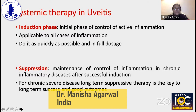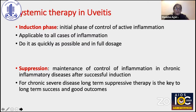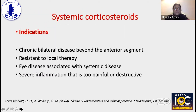For systemic therapy with corticosteroids in uveitis, we have an induction phase and a suppression phase. The induction phase is the initial phase of controlling active inflammation — applicable to all cases. It must be done as early as possible at full dosage. For the maintenance phase in chronic inflammatory diseases, long-term suppressive therapy is key to long-term success and to avoid any recurrence.